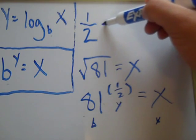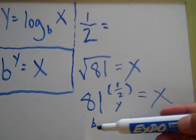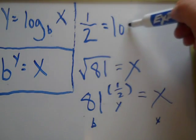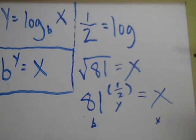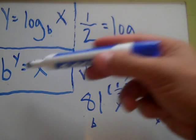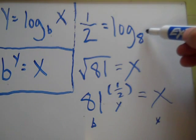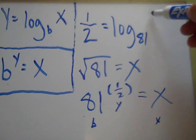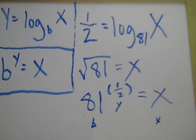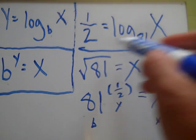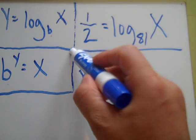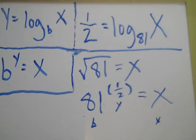So one half equals, now you got to put logarithm here because you're expressing a logarithmic function. But if you want to look for the base now, the base is what? It's 81, right? And this thing is still x. So that is what your logarithmic expression will look like.